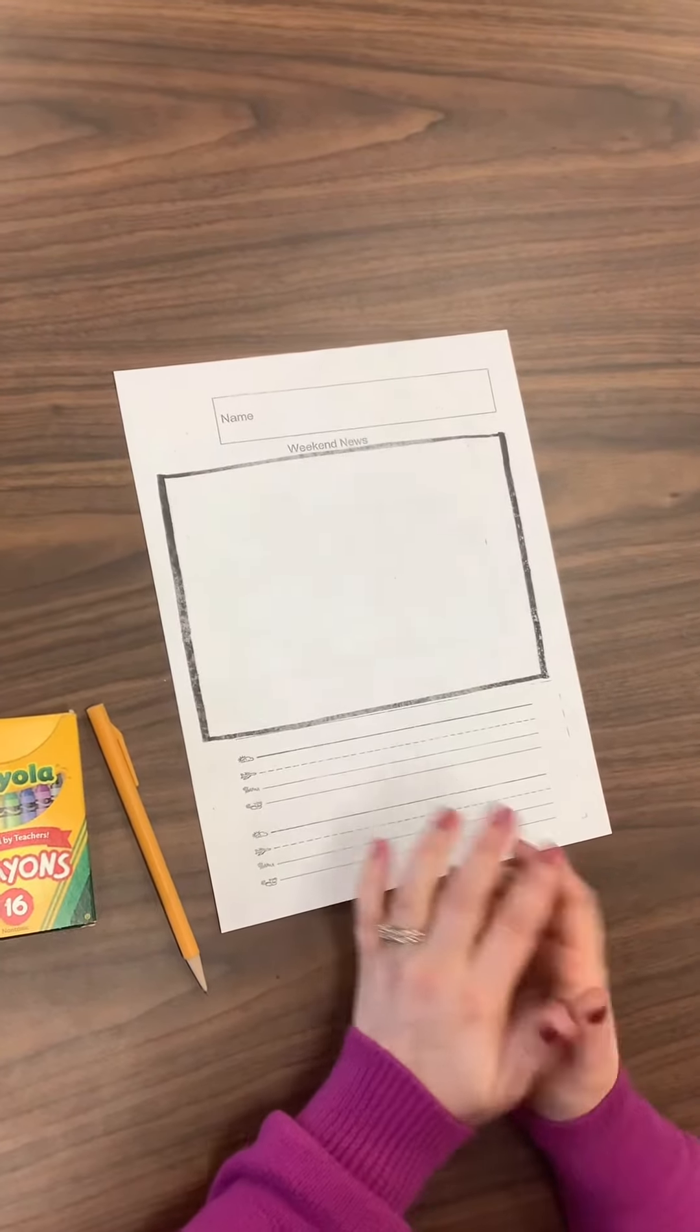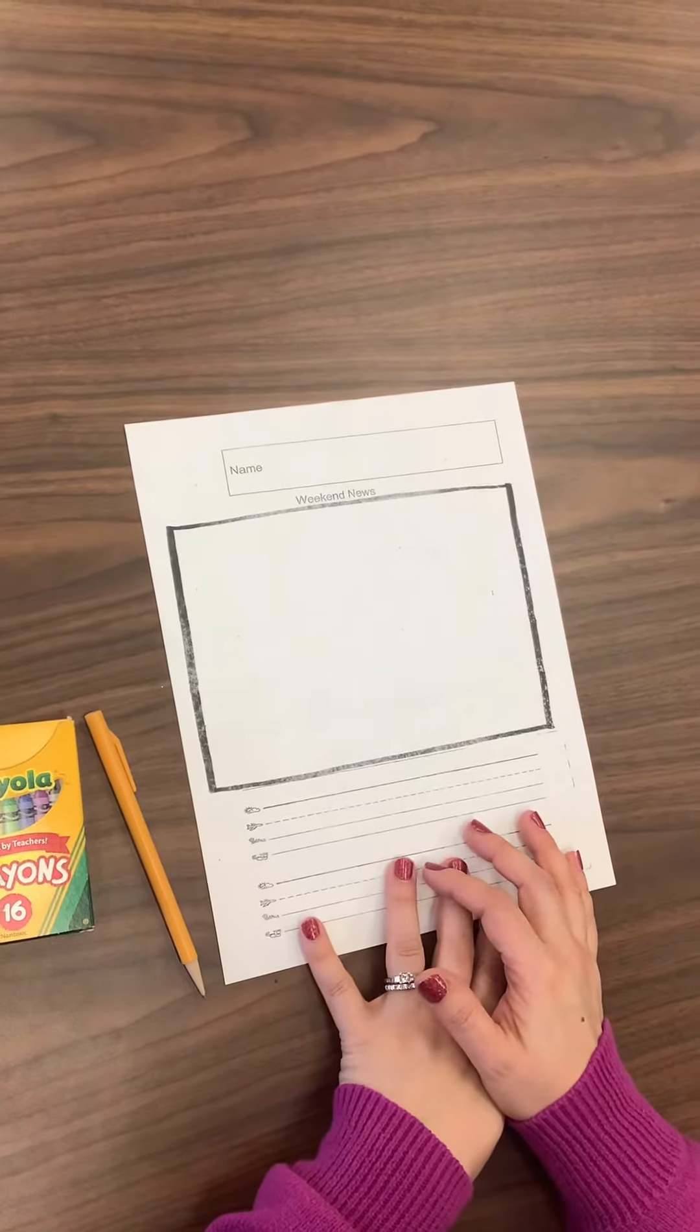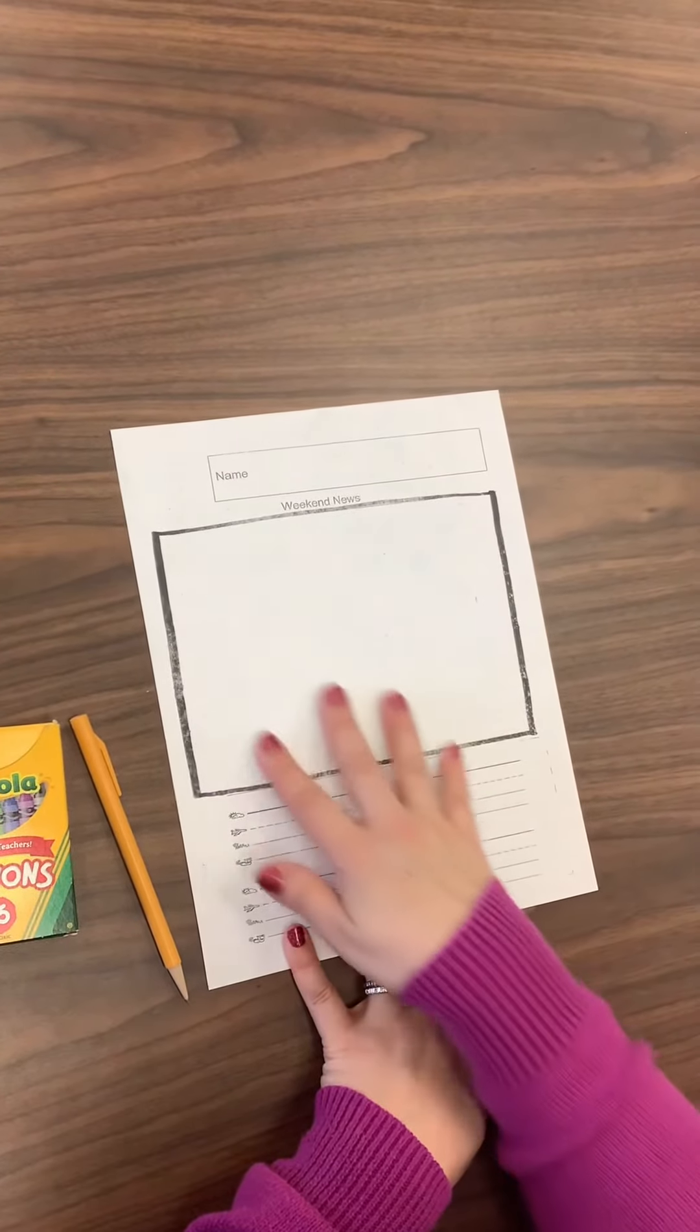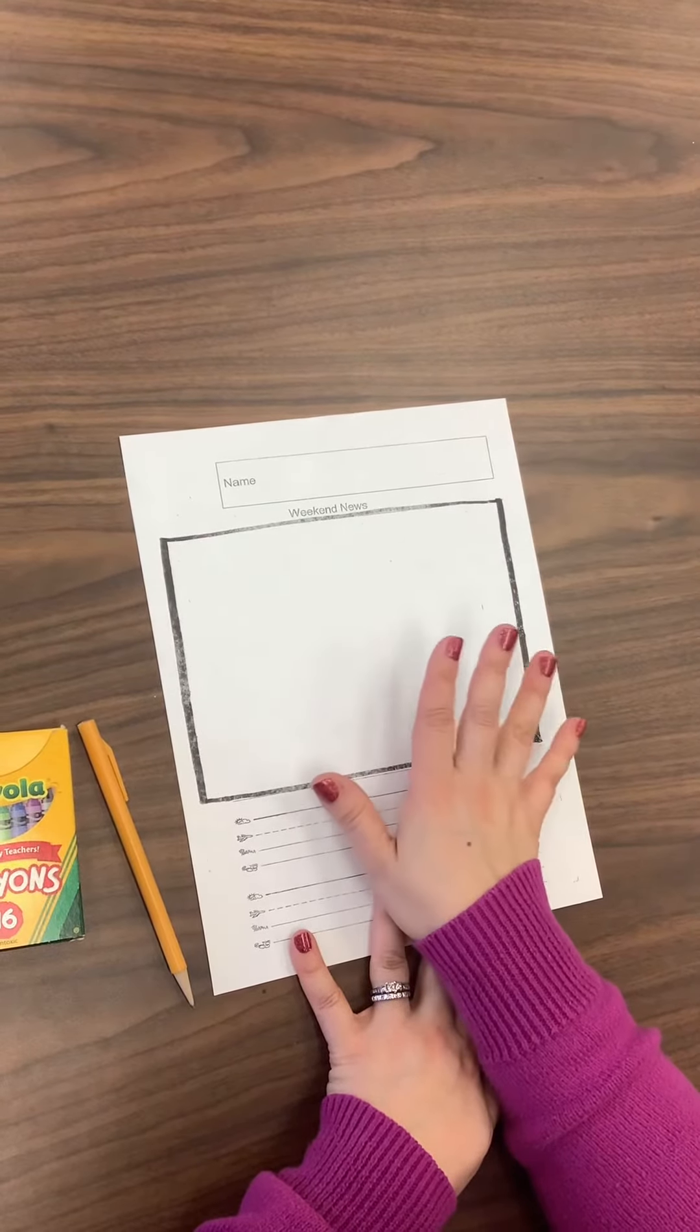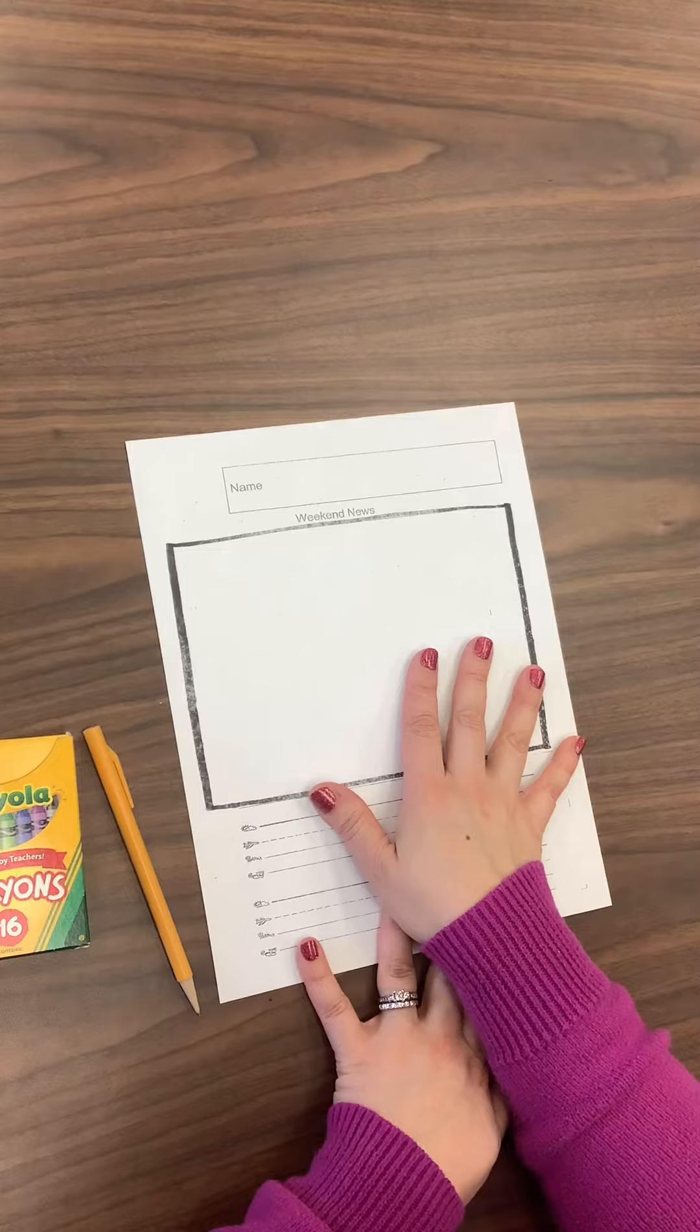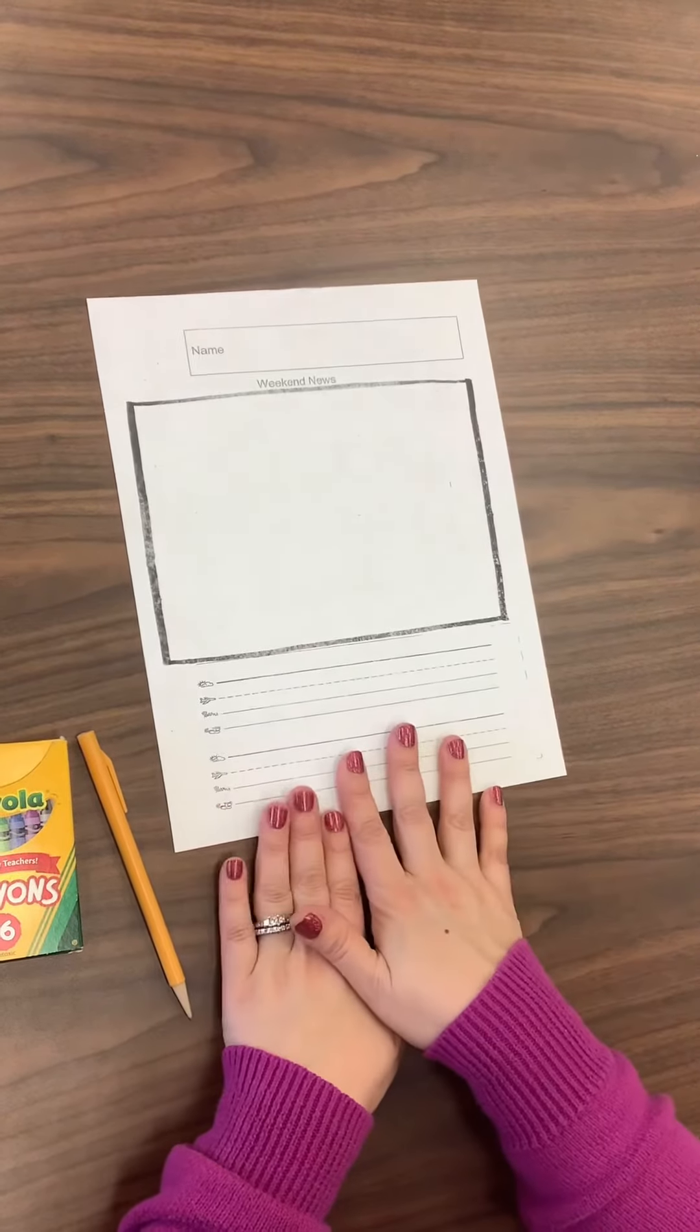So what we want you to do today is think about something you did over the weekend and we want you to draw a really great picture and then you can label your picture, make sure it's five stars, and then that can help you write your sentence down below.